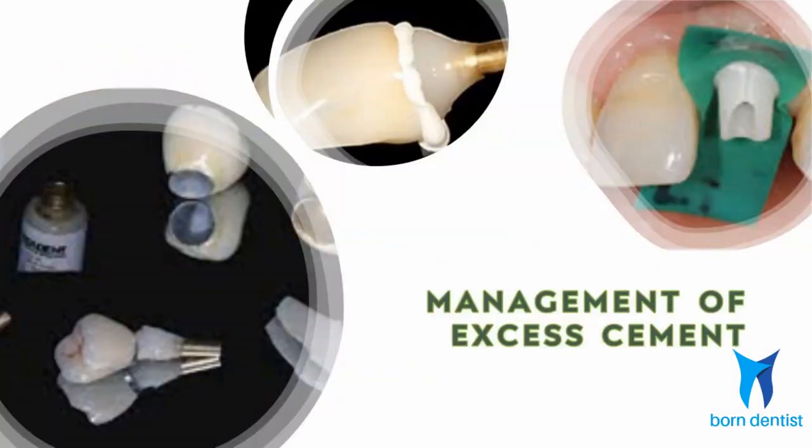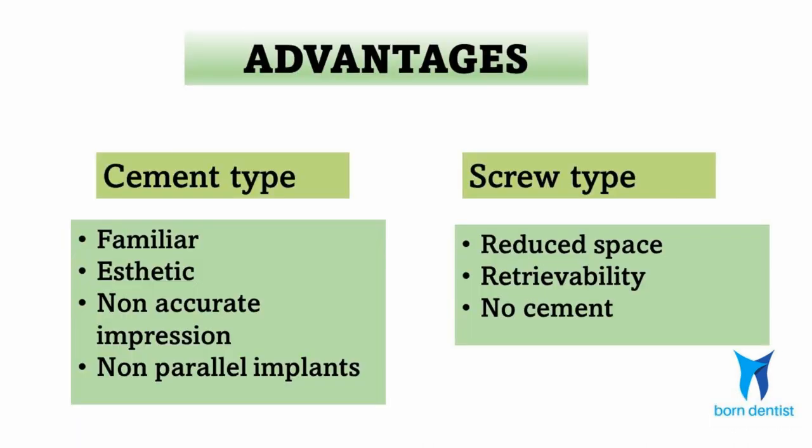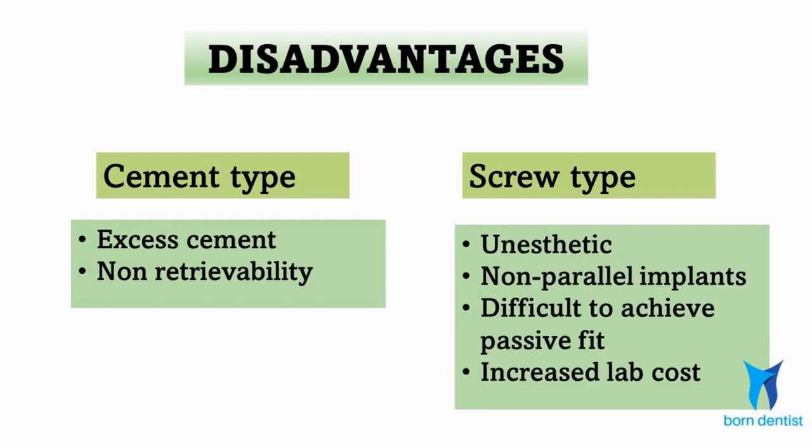There are several techniques advocated to manage the problem of excess cement. The greatest advantage of cement type is that every dentist is familiar with it, as it is similar to crown and bridge. It is also aesthetic since there is no screw hole in the crown, and since it is a two-piece system, minor errors in impression and implant angulation can be easily managed. The biggest advantage of screw type is its ability to retrieve the prosthesis, and it is also the restoration of choice when restorative space is less than ideal. In addition, with screw type there is no cement.